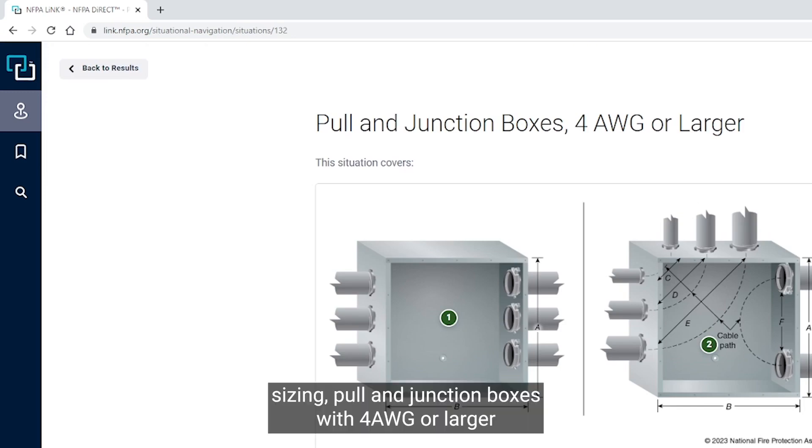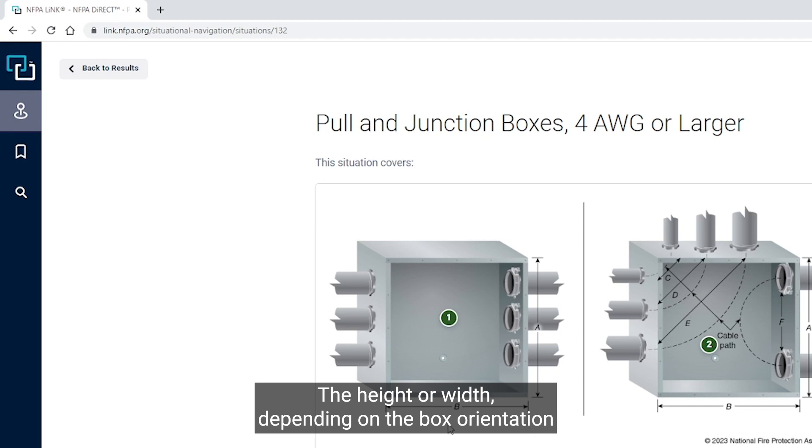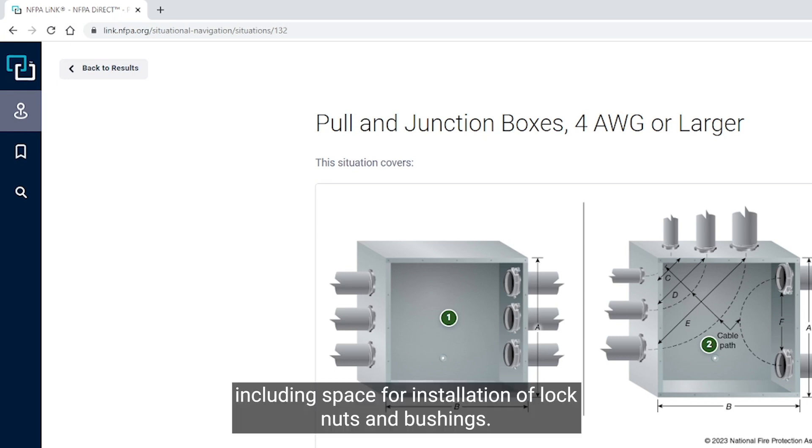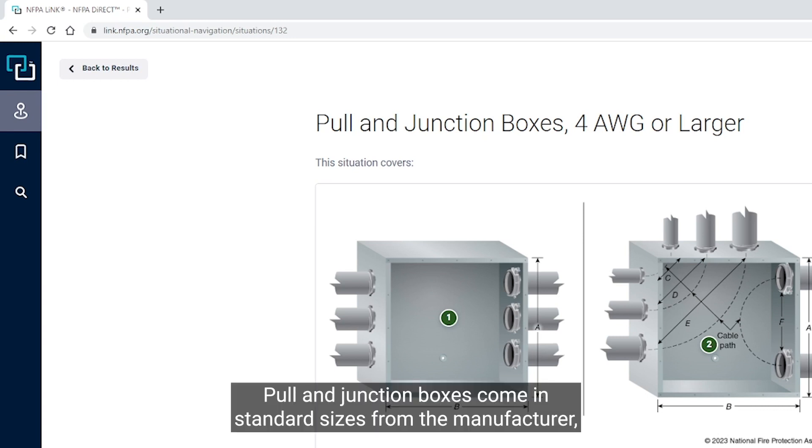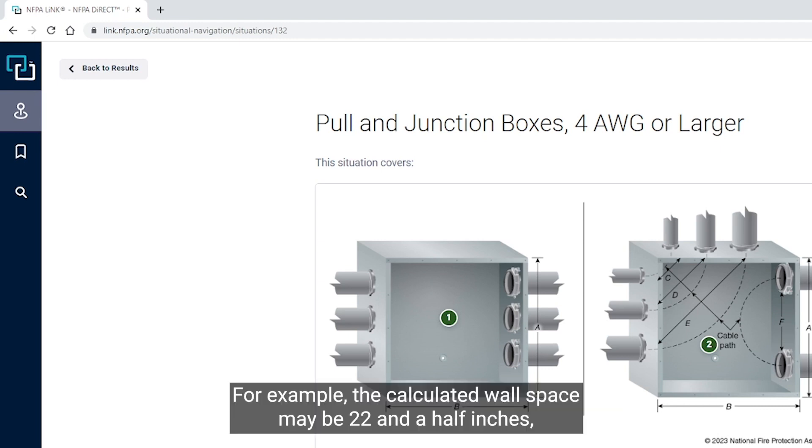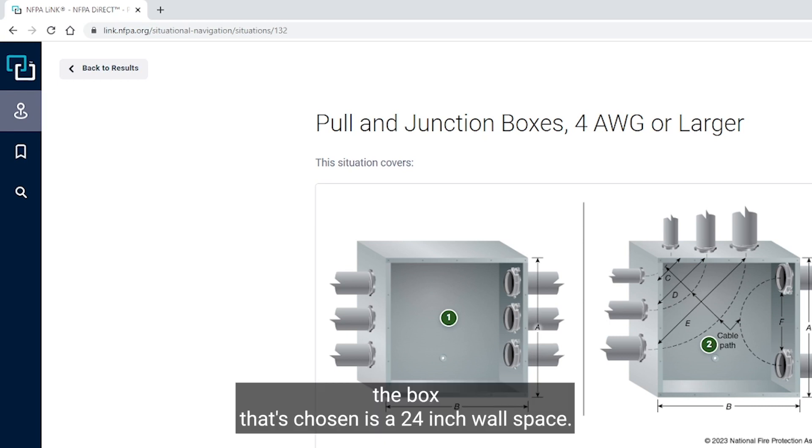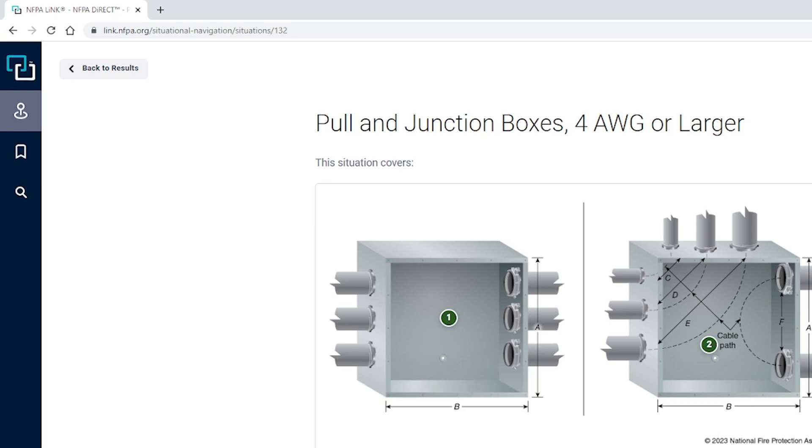Sizing pull and junction boxes with four AWG or larger conductors for a straight pull is, well, straightforward. The height or width, depending on the box orientation and the depth of the box, will be based on the overall raceway dimensions, including space for installation of lock nuts and bushings. Pull and junction boxes come in standard sizes from the manufacturer, which will ultimately dictate the size of the box.